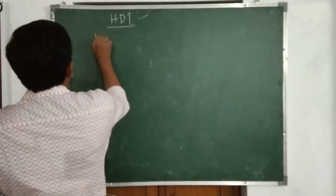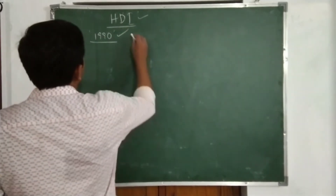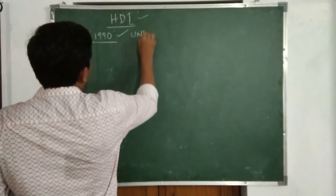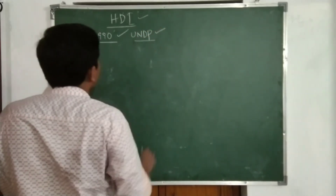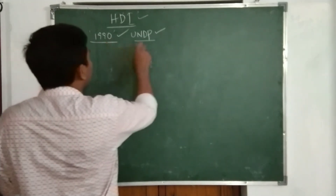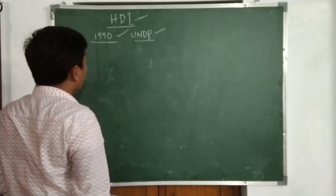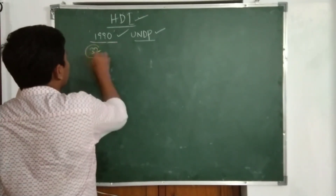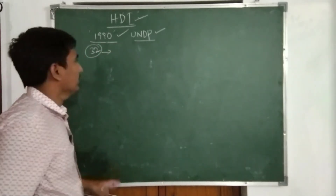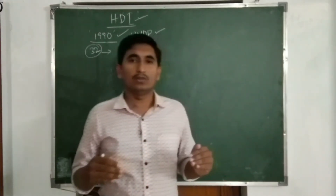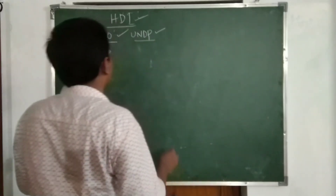In 1990, the first Human Development Index formula was published by the UNDP — the United Nations Development Programme. Every year, the Human Development Report is published by the UNDP.